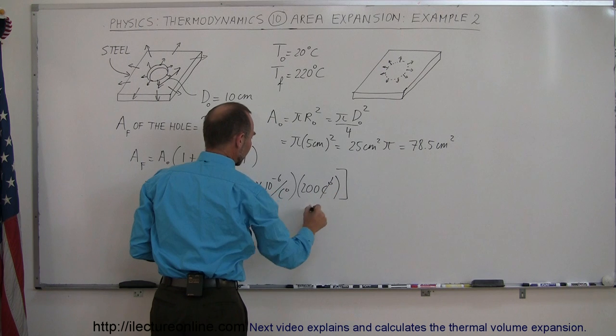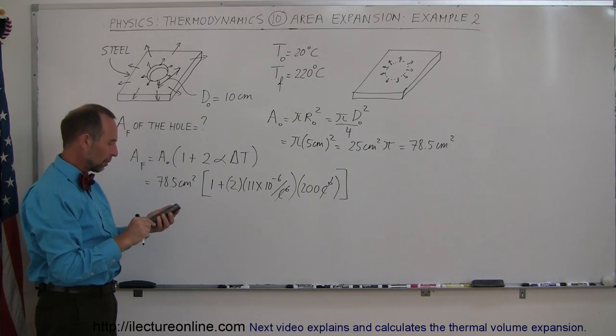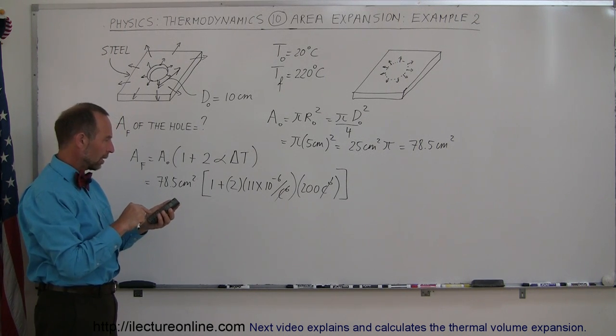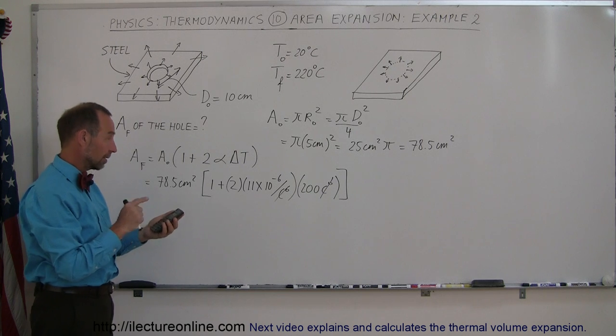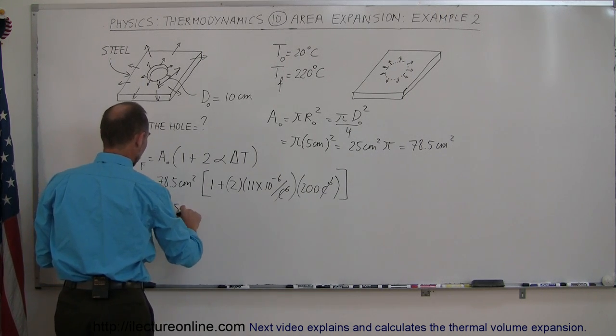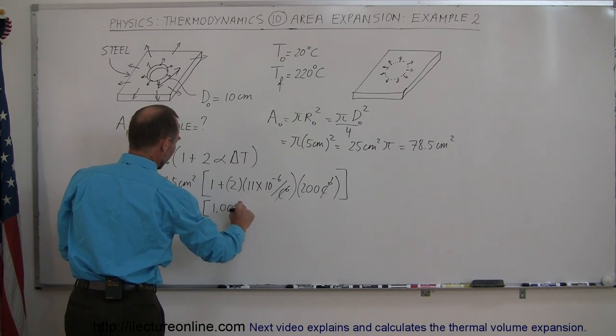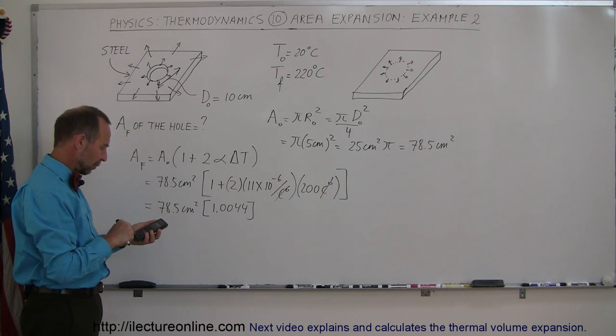And of course, the centigrade degrees cancel out. Let's figure out what that is equal to. So we multiply that times 2 times 11e to the minus 6 times 200 plus 1. And just so that you can see what that is equal to, that's 78.5 centimeters squared times 1.0044. So I'm going to multiply that times 78.5.